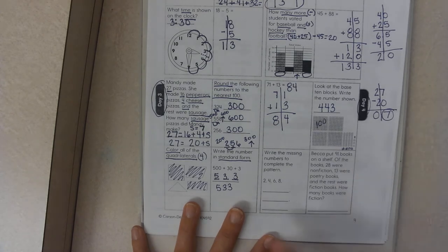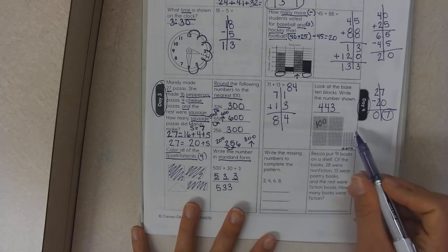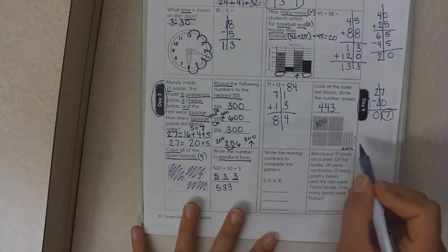Because what happens if there was 12 ones or 11 tens? Then we would have to do what's called regrouping.